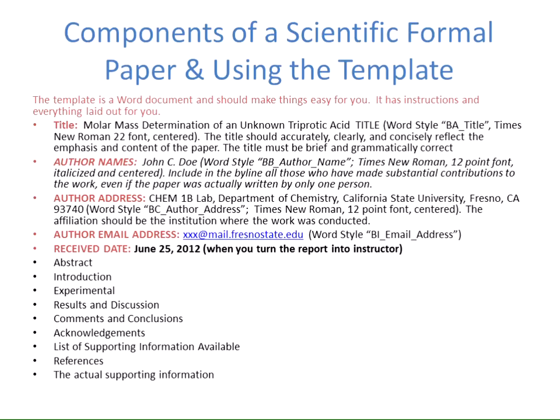After the title comes the author's name — since you are working individually, it will just be your name. Then the author address, which will be the Chem 1B lab, Department of Chemistry, followed by the author email address and the receive date — the date the lab report is due when you turn it in. After the receive date comes the abstract, which gives a summary of the experiment, what happened, and the major conclusions. The abstract should be very short and concise — probably two or three sentences for this experiment.